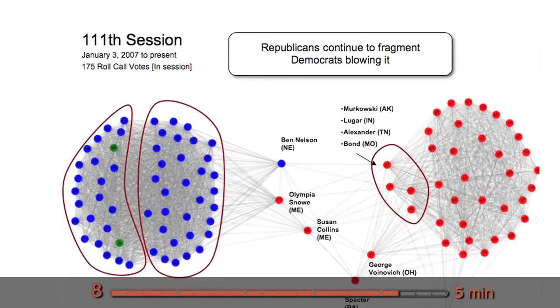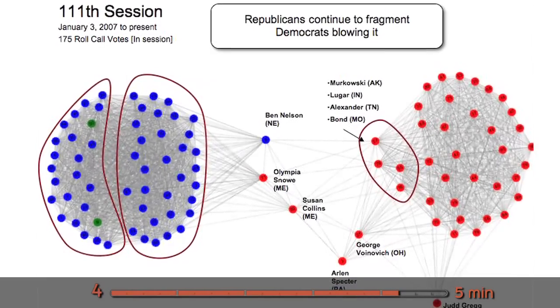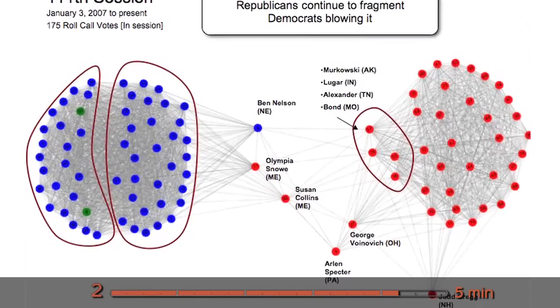This is the current state of the Senate social graph. So you can see it's split about 50-50 for the Democrats. The Republicans have a smaller core, but still very cohesive with more people splitting off.